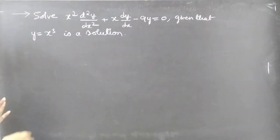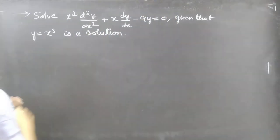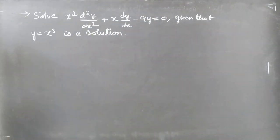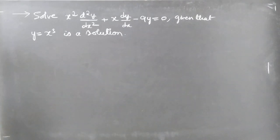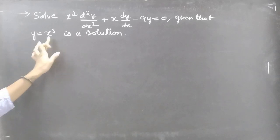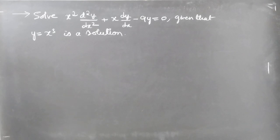Here we notice we have variable coefficients and the RHS is 0. We are already given a solution y = x³ directly, but we need to find the general solution to this equation — the general solution containing arbitrary constants.